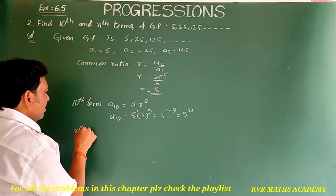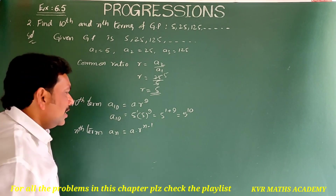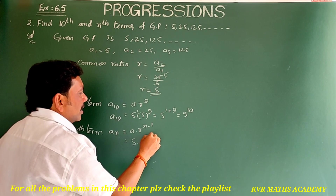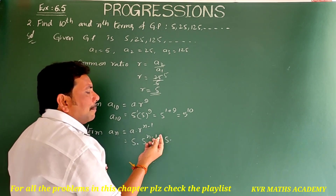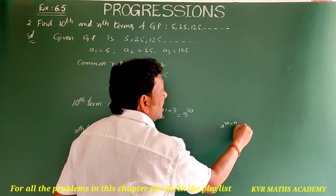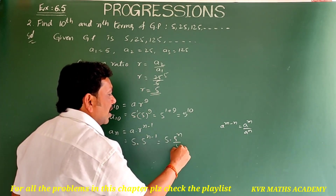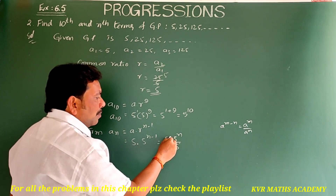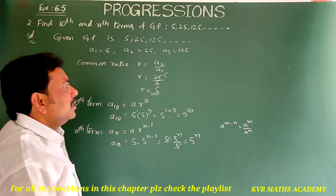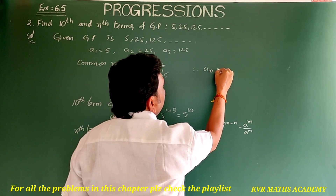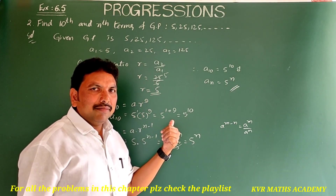In the same way, let us find the nth term. An = a × r^(n−1) = 5 × 5^(n−1). Now 5^(n−1) = 5^n / 5^1. So 5 × (5^n / 5) — the 5s cancel — giving an = 5^n. Therefore, the 10th term A10 = 5^10 and the nth term An = 5^n. Have you understood clearly? Note it down.